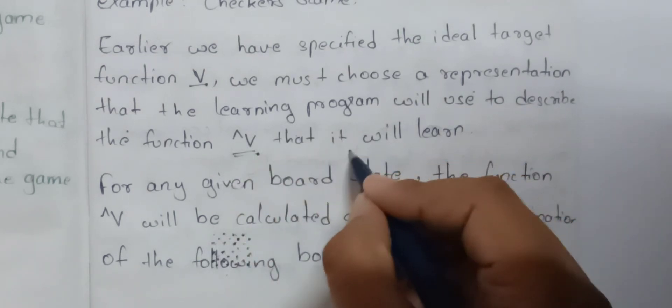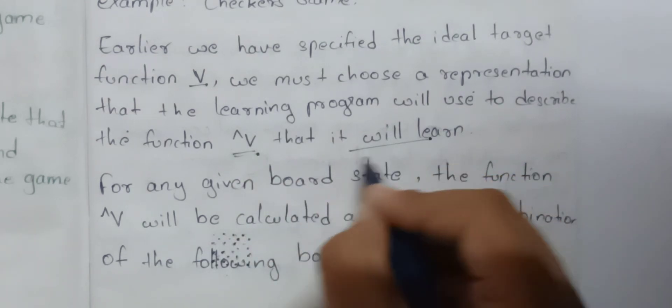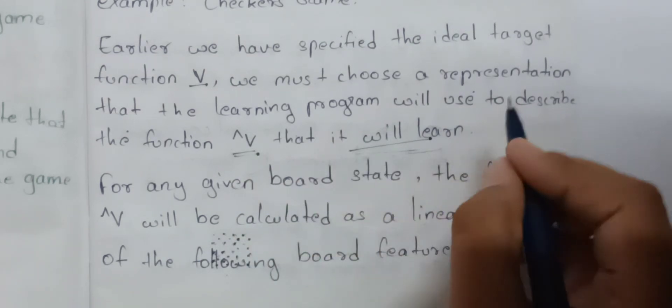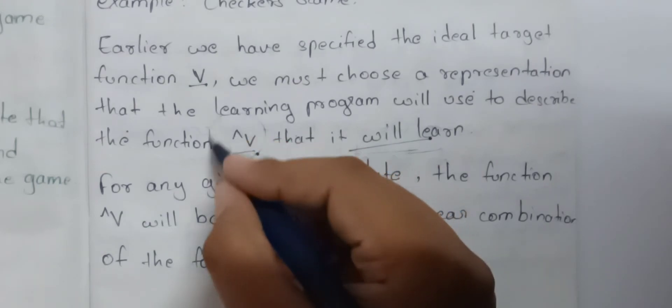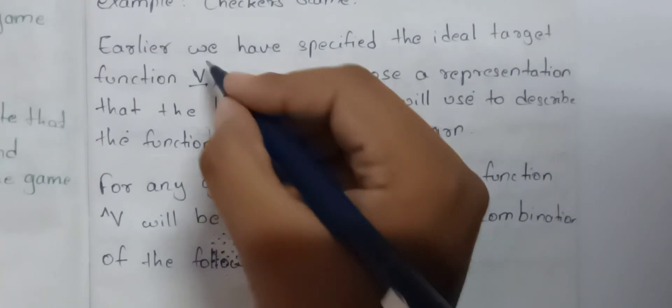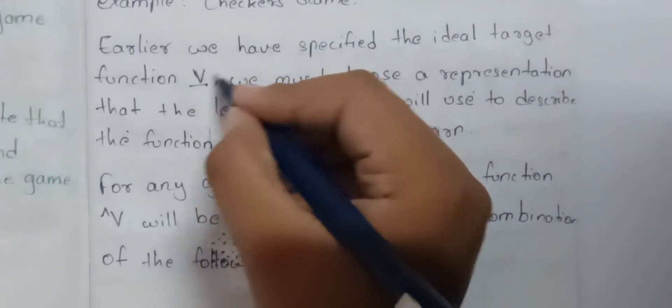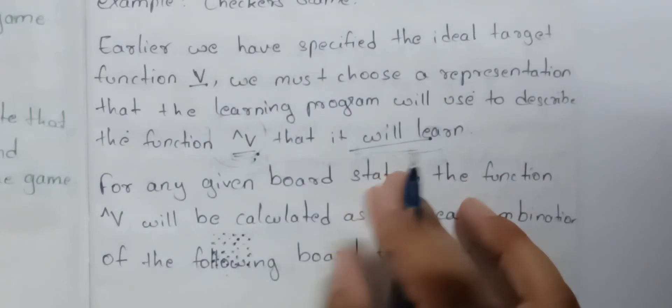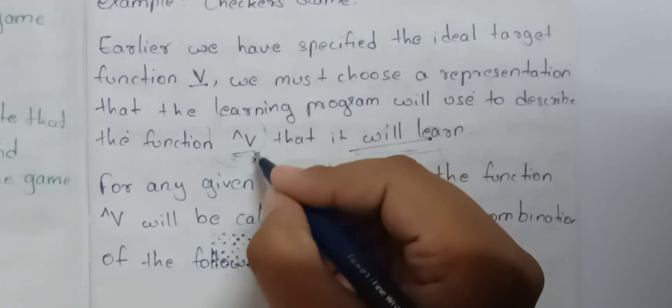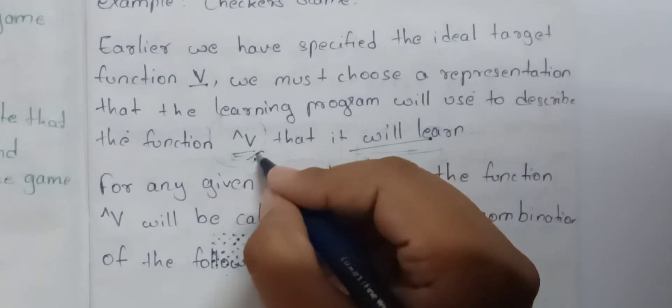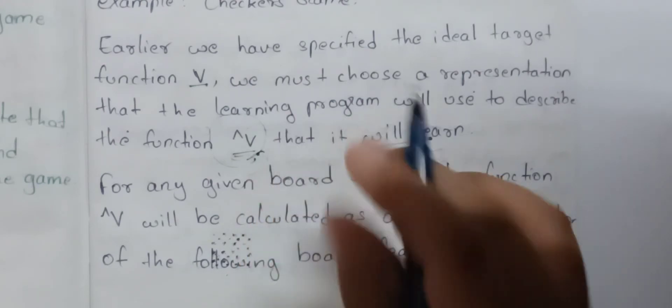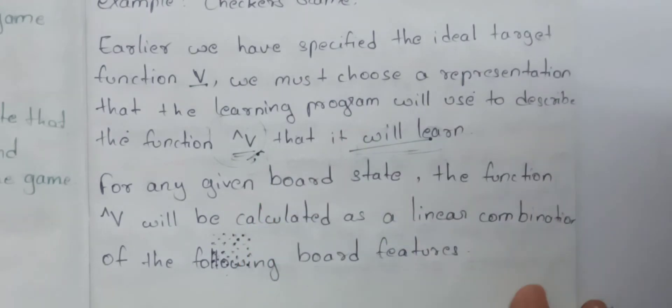If we are learning, we will represent V'. Because it will not be the complete ideal V, we will get an approximation V'.